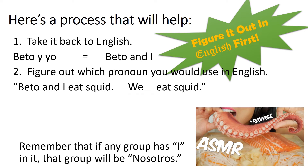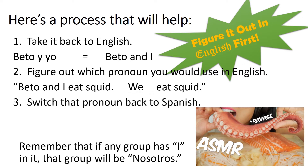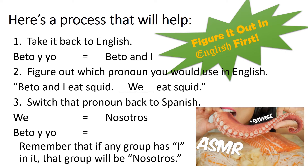Now remember, if any group has 'I' in it, that group will be nosotros. Every time, no matter what. Now that you got the pronoun 'we,' switch that pronoun back to Spanish. 'We' would be nosotros. And that means any time you're conjugating a verb in a sentence where the subject is Beto y yo, you're going to use the nosotros form.